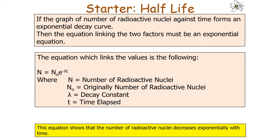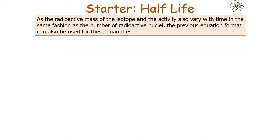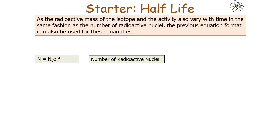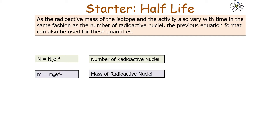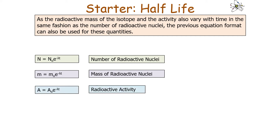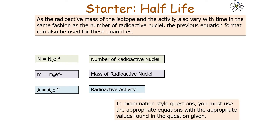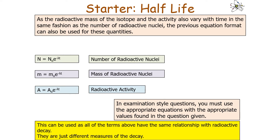This equation shows that the number of radioactive nuclei decreases exponentially with time. Because radioactive mass and activity also vary with time in a similar fashion, the same equation format applies to each quantity. We can write: N equals N₀ e to the minus lambda t for number of nuclei; M equals M₀ e to the minus lambda t for mass; and A equals A₀ e to the minus lambda t for activity. In exam questions, use the appropriate form based on the values given.